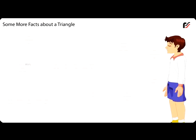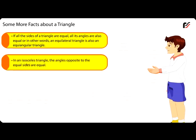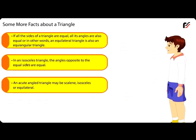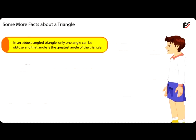Some more facts about a triangle: If all the sides of a triangle are equal, all its angles are also equal — in other words, an equilateral triangle is also an equiangular triangle. In an isosceles triangle, the angles opposite to the equal sides are equal. An acute angle triangle may be scalene, isosceles or equilateral. In an obtuse angle triangle, the side opposite to the obtuse angle is the longest, and only one angle can be obtuse — that angle is the greatest angle of the triangle.